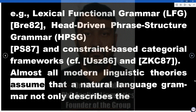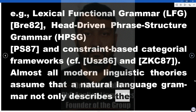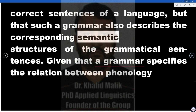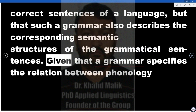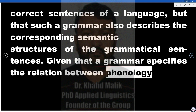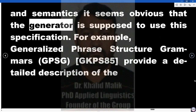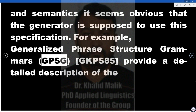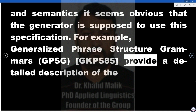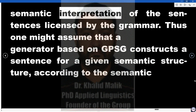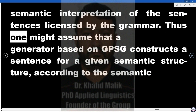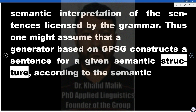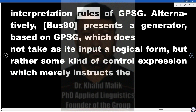Almost all modern linguistic theories assume that a natural language grammar not only describes the correct sentences of a language, but that such a grammar also describes the corresponding semantic structures of the grammatical sentences. Given that a grammar specifies the relation between phonology and semantics, it seems obvious that the generator is supposed to use this specification. For example, Generalized Phrase Structure Grammar, GPSG (GKPS 85), provides a detailed description of the semantic interpretation of the sentences licensed by the grammar. Thus one might assume that a generator based on GPSG constructs a sentence for a given semantic structure according to the semantic interpretation rules of GPSG.